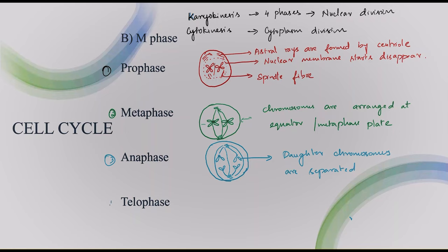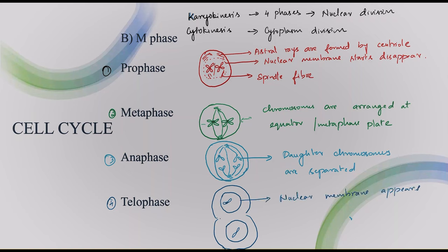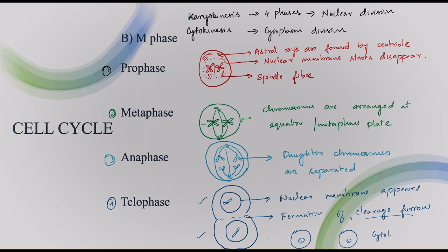Now let's get into telophase, the fourth phase. In telophase, the nuclear membrane starts appearing and there will be the formation of a cleavage furrow — meaning the two cells start to separate. In plants, cell division is separated by cell plate formation, but in animals the furrow is formed. After this, cytokinesis happens, meaning the two cells get fully separated.